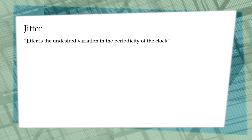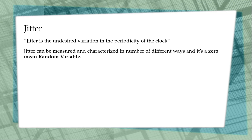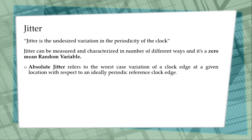Next is jitter. Jitter is the undesired variation in periodicity of the clock. It can be measured and characterized in a number of different ways and is a zero-mean random variable, meaning it is uniformly distributed within its limits. One type is absolute jitter, which refers to the worst-case variation of a clock edge at a given location with respect to an ideally periodic reference clock.